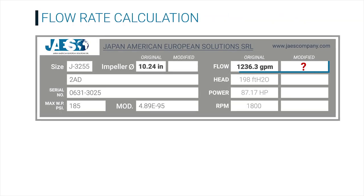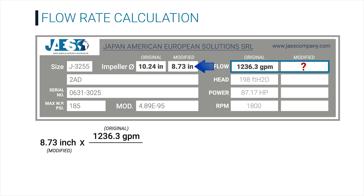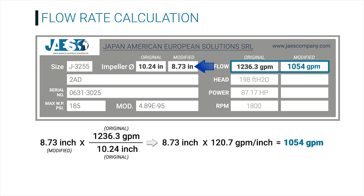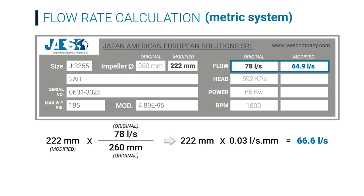Now we are going to calculate the value of the new flow rate in the case we need to change the diameter of the impeller. In this case, the new flow rate is equal to the modified impeller diameter multiplied by the division between the original flow rate — 1236.3 gallons per minute — and the original impeller diameter, which is 10.24 inches. Following these formulas, the result will be 1054 gallons per minute. Using the metric system, the impeller diameter values are in millimeters and the resulting flow rate is 66.6 liters per second.